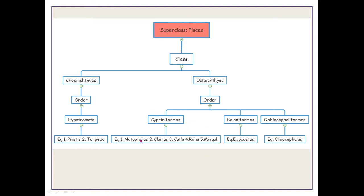The five Cypriniformes examples are: Notopterus, Clarias, Katla, Rohu, and Mrigal. From the Beloniformes order, we study one example — the flying fish Exocetus. From Ophiocephaliformes, we study one example — Ophiocephalus.